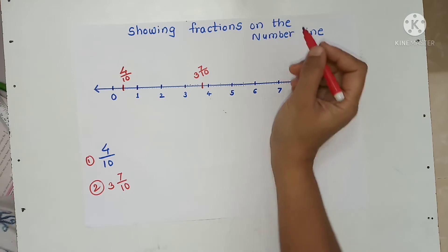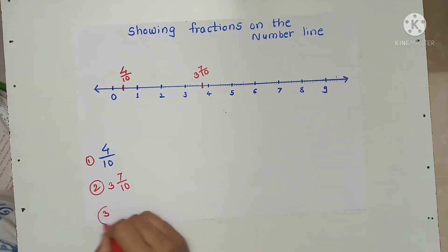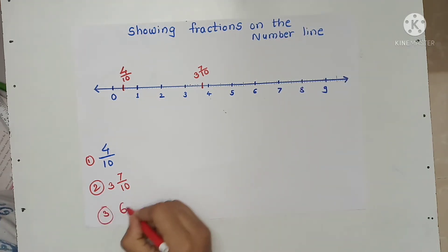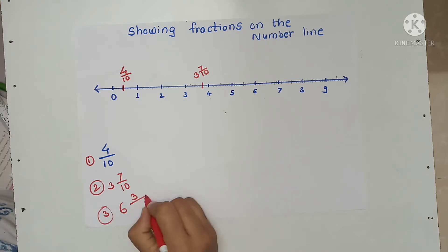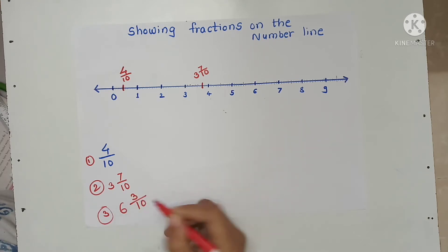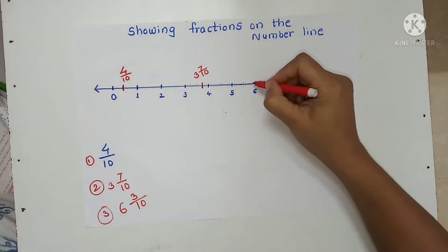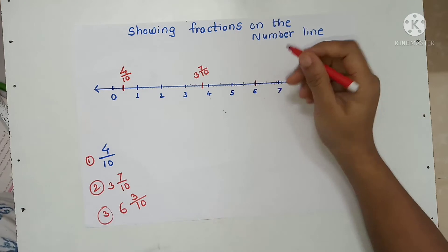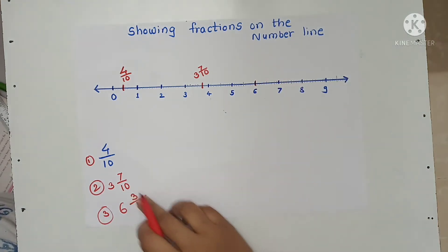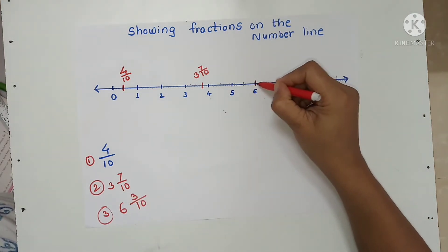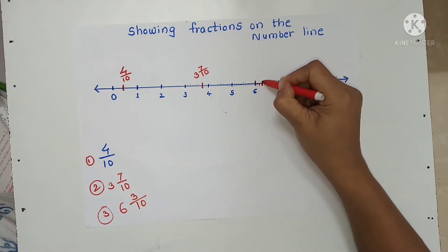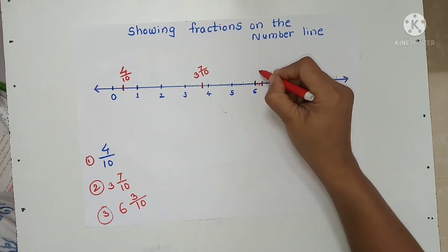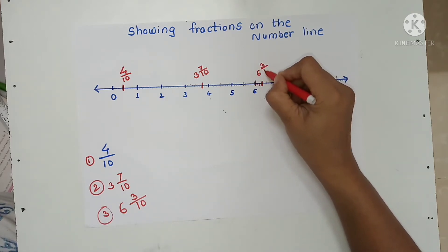The third fraction is 6 and 3 upon 10. Whole number 6 is here. The 3rd line from 6: 1, 2, and 3. This is our fraction 6 and 3 upon 10.